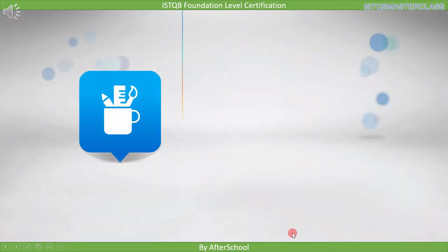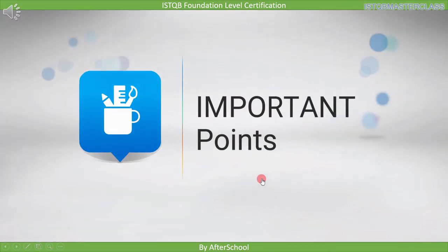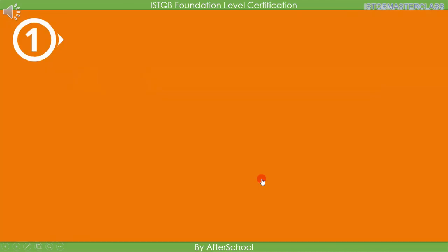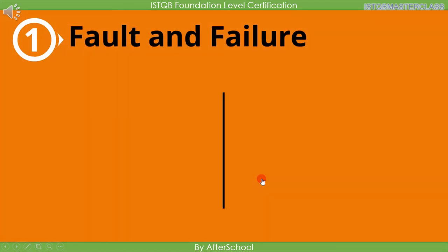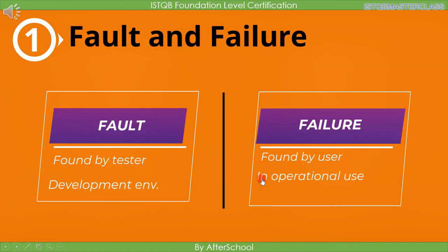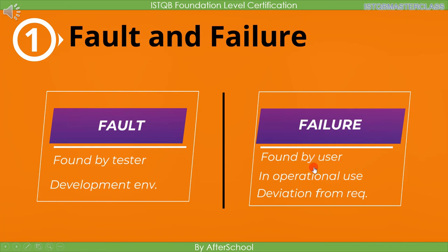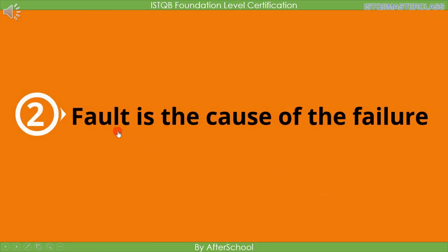Before we end this video, let's have a look at the important points. You shall be in a position to differentiate between fault and failure. Fault is found by the tester in the development environment, whereas failure is found by the user during operational use. It happens due to deviation from the requirement, and fault is the cause of the failure.